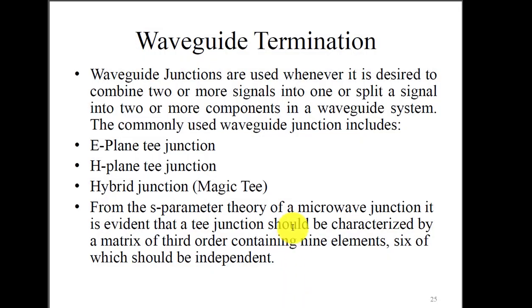Good morning. Today we are going to discuss microwave T-junctions. In a transmission line, it is sometimes necessary to combine two or more microwave signals into one signal, or split a single signal into two or more components. The most commonly used waveguide component for this is the waveguide T-junction. The main types are the E-plane T-junction, H-plane T-junction, and hybrid T-junction. The characteristics, construction, and behavior of these are analyzed using scattering parameters or S-parameters, which give the input and output power relationships at each port.